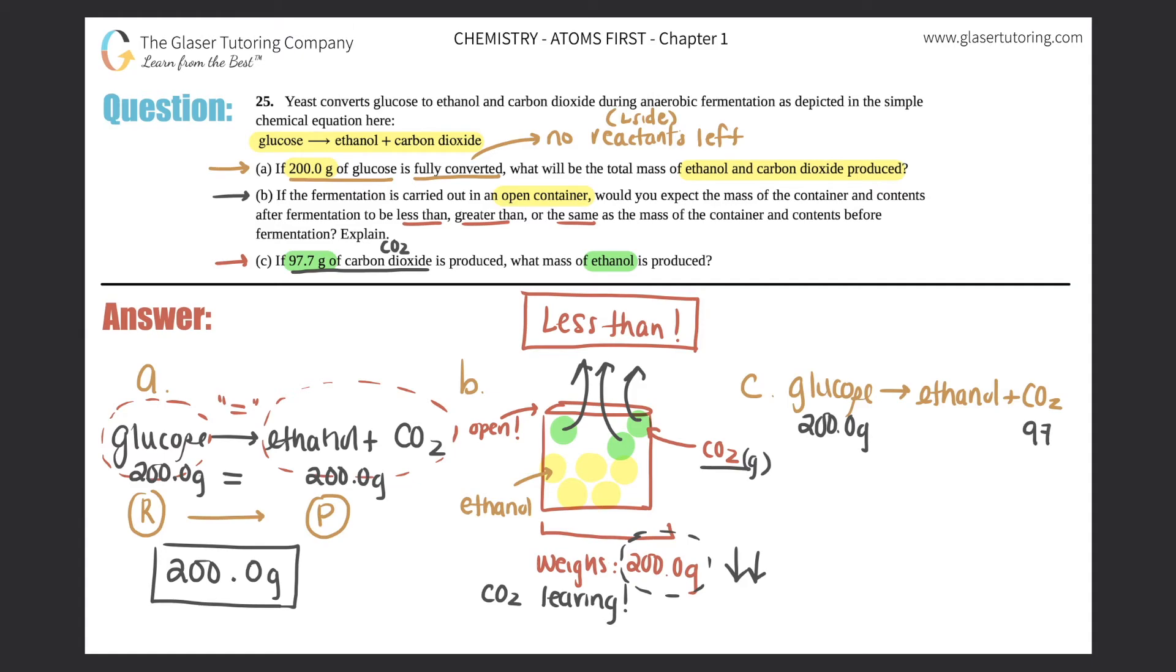So we're going to put that over here, 97.7 grams. On this side we want to find out how many grams of ethanol is. Now just remember law of conservation of matter means that all of the reactants has to equal all the products, so we don't know what this is. We could label this as x and it becomes a simple algebraic expression.